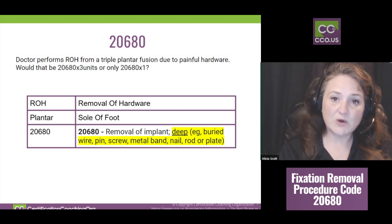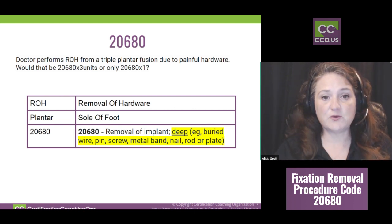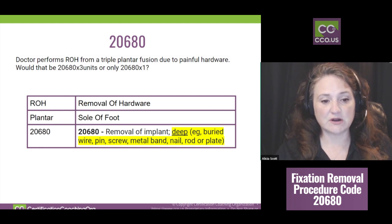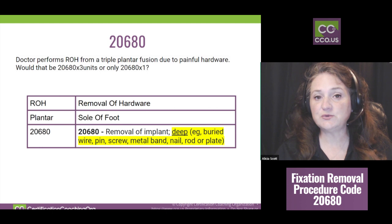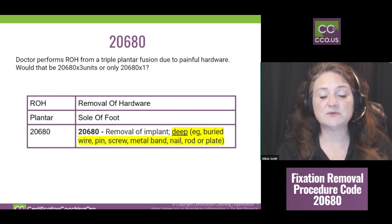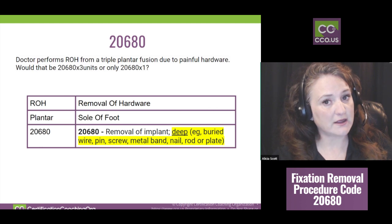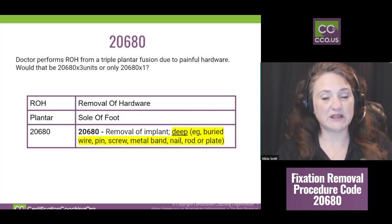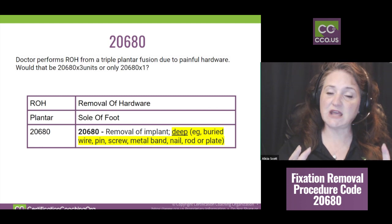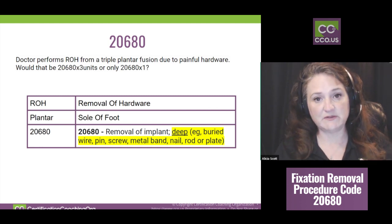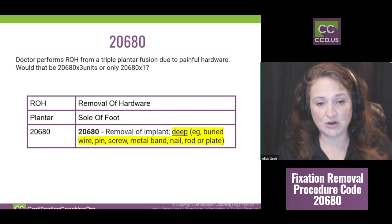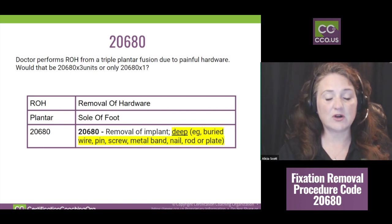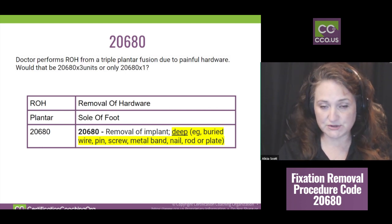The question that came in was: a doctor performs an ROH — removal of hardware — from a triple plantar fusion due to painful hardware. Would that be 20680 times three units or only 20680 times one? Let's break down the information. For those of us who aren't as CPT-savvy, whenever you have an ROH, that's a very common term used in orthopedics and it just means removal of hardware.